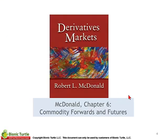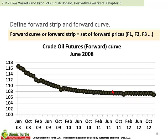McDonald's Chapter 6 on Commodity Forwards and Futures reappears from prior years and starts with asking us to define a forward strip or a forward curve. So this is as of a point in time, June 2008. You'll recall there's always a spot price, which is the price we would need to pay in order to receive the commodity on the spot. There's only typically one spot price, abstracting the bid-ask spread. However, there are several forward or futures prices — one for each future date.